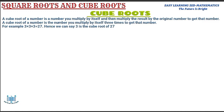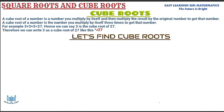A cube root is a number you multiply three times by itself in order to get a cube. You can write three as the cube root of 27 like this: you write a small three, then a radical sign, then 27. That is the cube root of 27, which equals three — that's how we write a cube root.